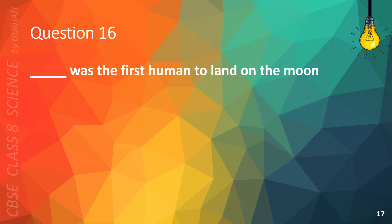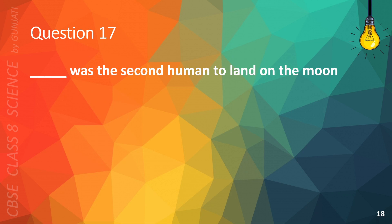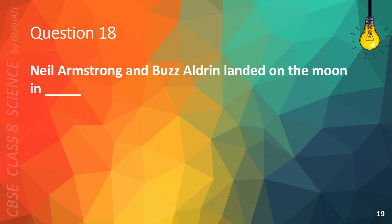Question 16. Blank was the first human to land on the Moon. A. Edwin Aldrin, B. Yuri Gagarin, C. Neil Armstrong, or D. Rakesh Sharma. The correct answer is C. Neil Armstrong. Question 17. Blank was the second human to land on the Moon. The correct answer is A. Buzz Aldrin.